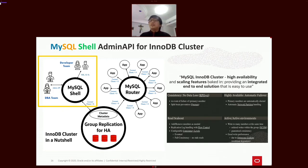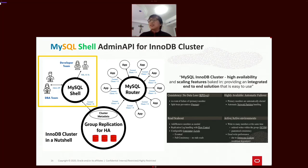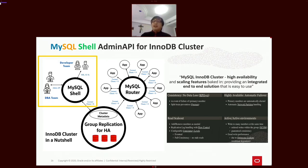MySQL Shell also has an Admin API that provides a set of commands for DBAs to easily deploy and manage the InnoDB Cluster. MySQL InnoDB Cluster is a shared-nothing architecture for MySQL high availability and scaling — an integrated end-to-end solution easy to use and manage via MySQL Shell. It provides consistency with no data loss, high availability with automatic failover, and replica scalability, and can provide up to 99.99% system availability SLA. MySQL Shell supports JavaScript and Python in addition to native SQL mode for the Admin API.